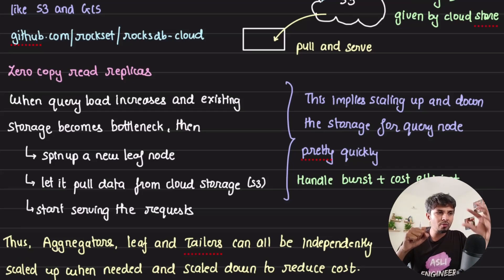There's not copying from one machine to another machine or something - it's literally one new machine spinning up, downloading data from S3, and starting to serve the request. Remember the files that are there on S3 are immutable. SST files are immutable so they can easily download the data.